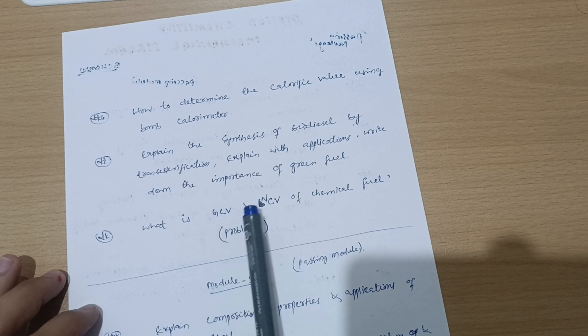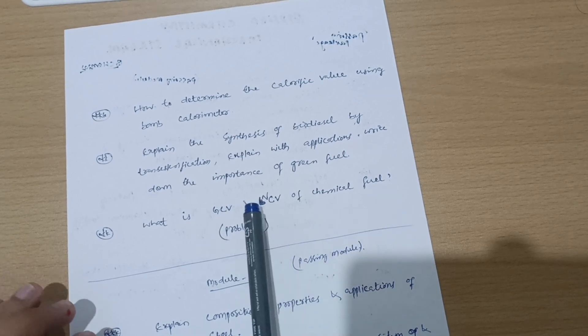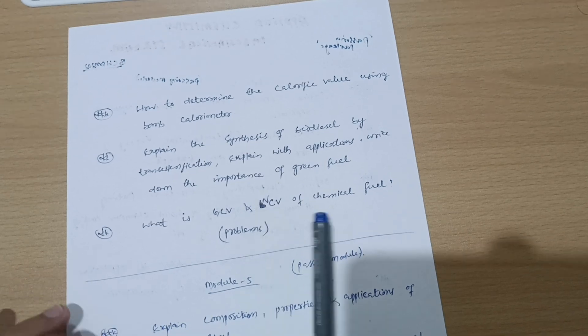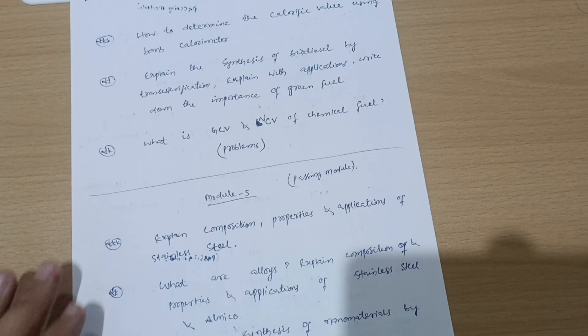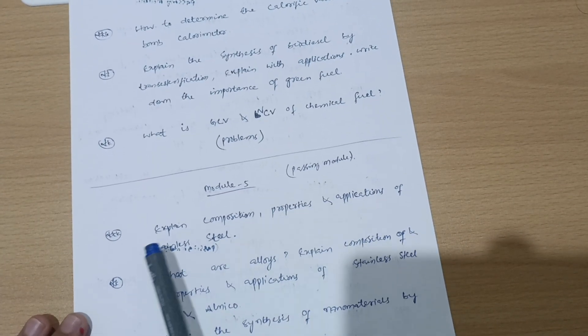Write down the importance of green fuel. Next is what is the gross calorific value GCV and NCV, that is net calorific value of chemical fuel. And if you are convenient and the problems are simpler, then go for the numericals also.